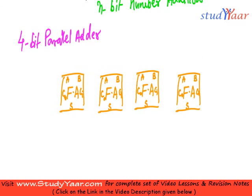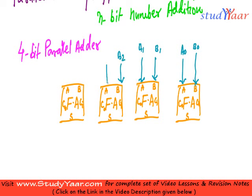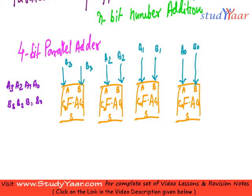Now if I have to add 4-bit numbers, I give the inputs to each full adder: B0 and A0 to the first, B1 and A1 to the second, B2 and A2 to the third, and B3 and A3 to the fourth. So my first number is A3, A2, A1, A0, and my second number is B3, B2, B1, B0. I have to add these numbers.